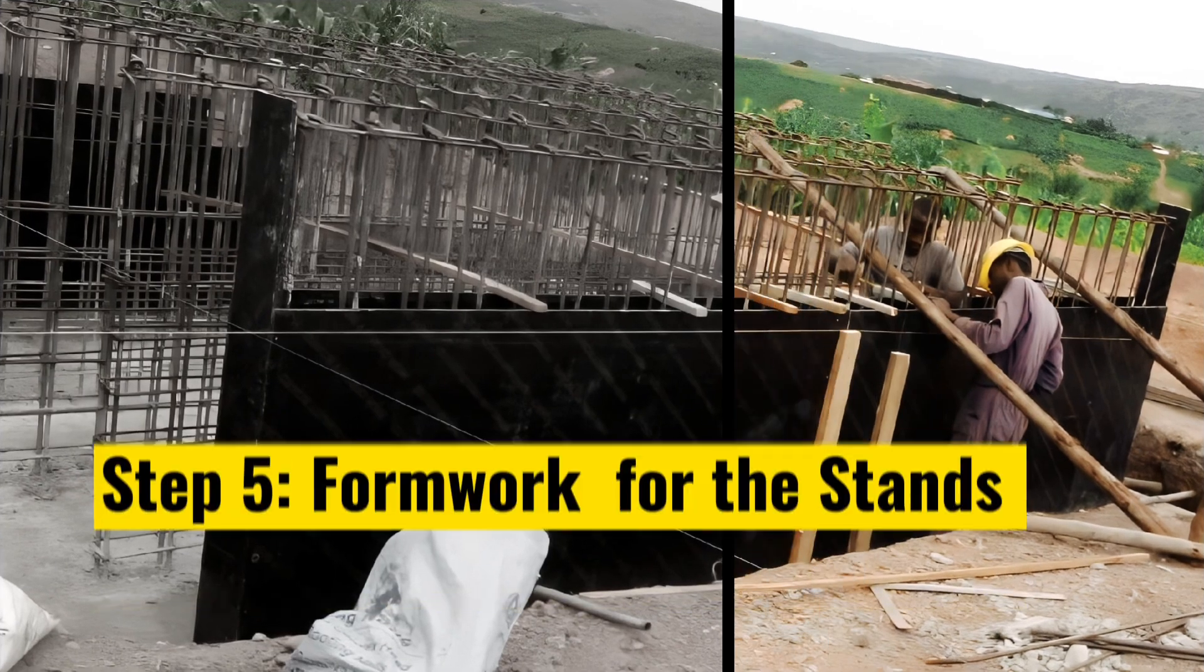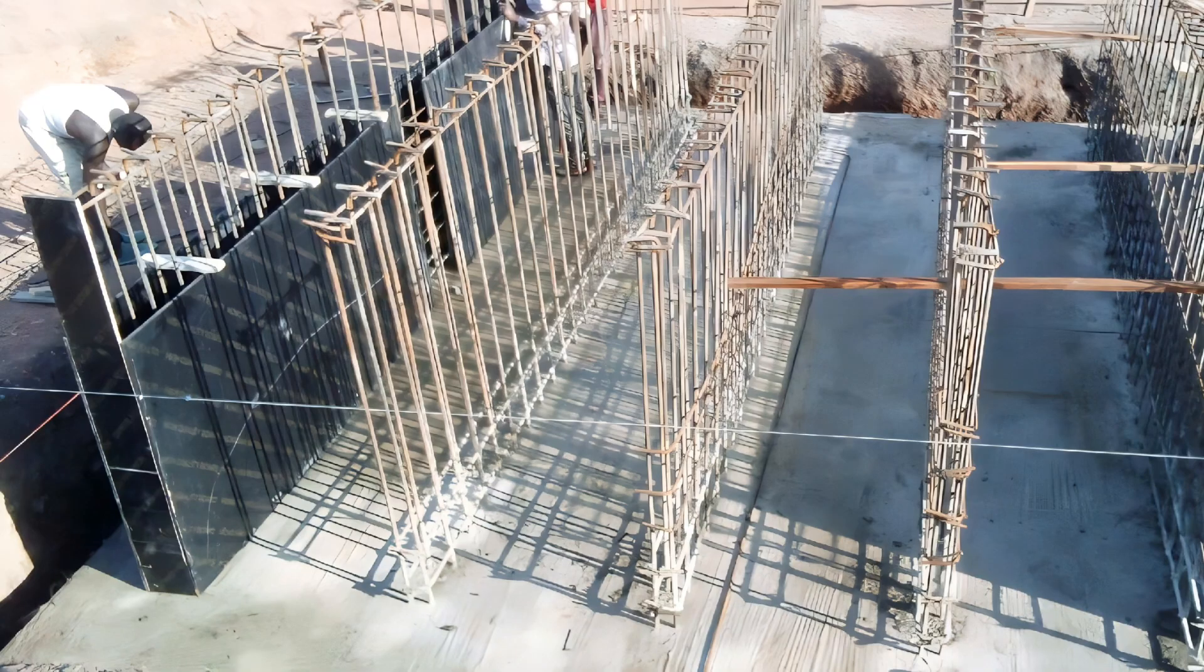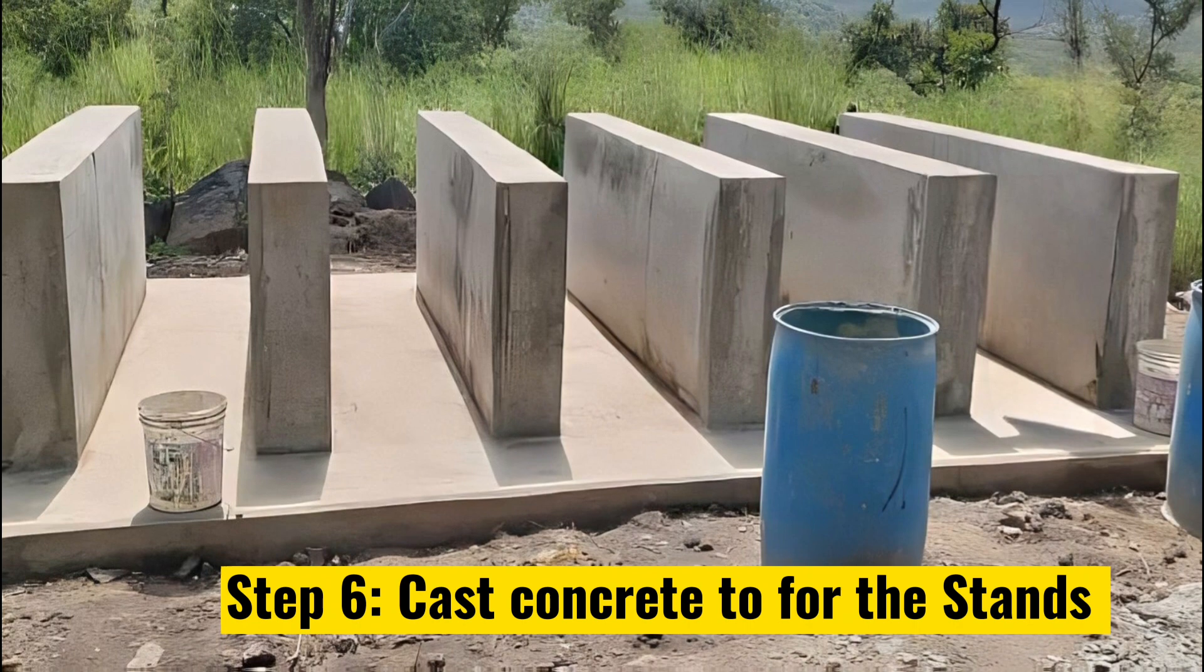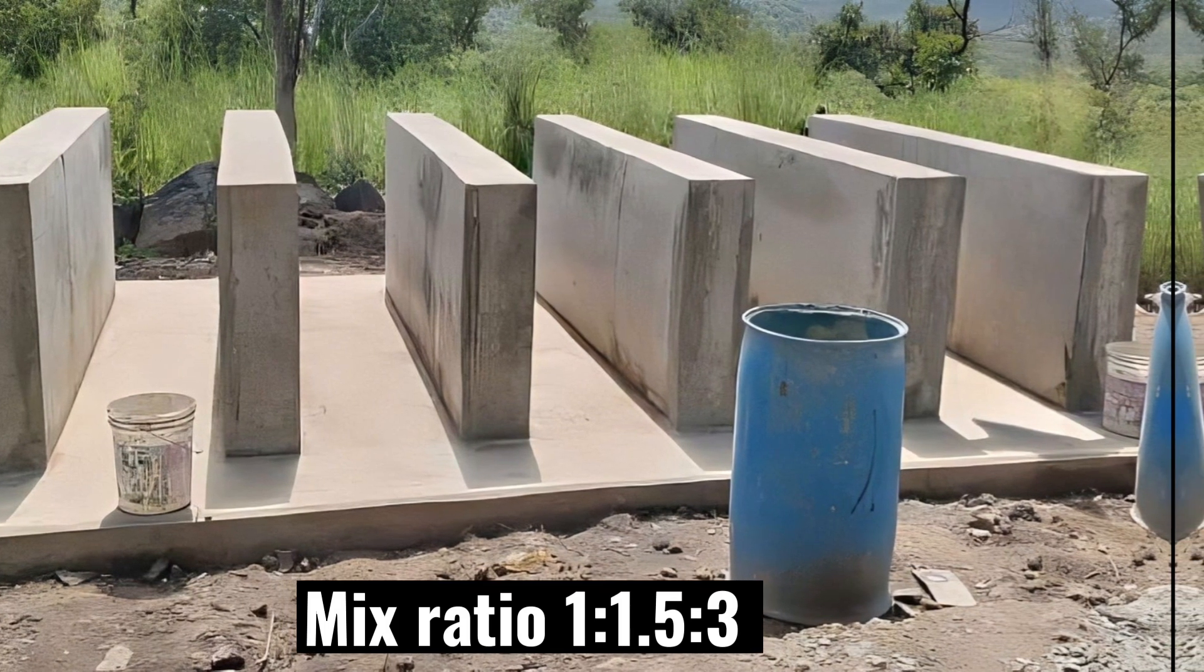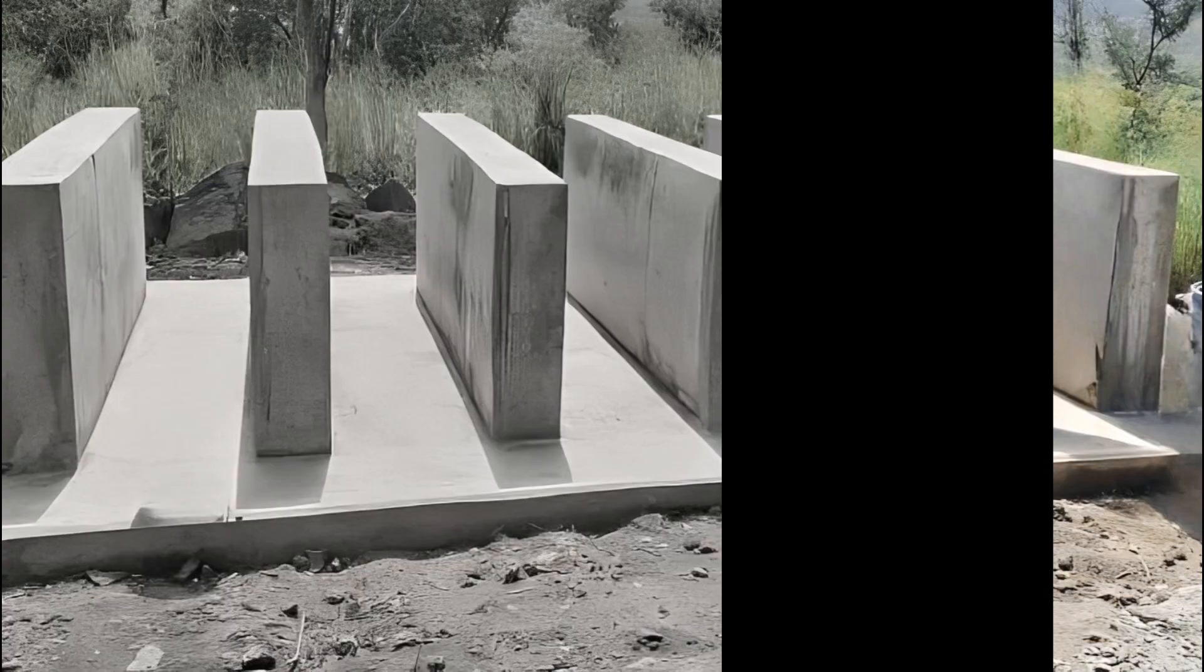Step 5 is to do formwork for the stands. Give the stands enough support to be able to have straight stands after deshuttering. Step 6 is to cast a 300mm thick concrete of grade 25 to the stands. Consider mix ratio 1:1.5:3. That is 1 part of cement, 1.5 sand and 3 parts of aggregates.